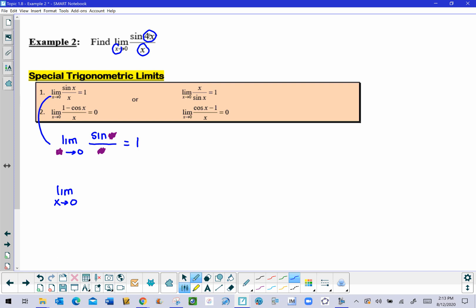And the way that we're going to initially make this happen is change one of them to match the other. Now what do I mean by one of them? We have a 4x on top and we have an x on bottom. Well what would be a lot easier to do is to change the x on the bottom so that it is a 4x.